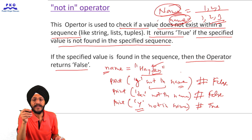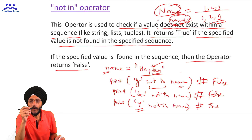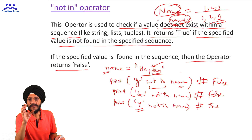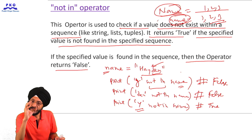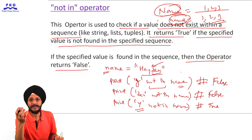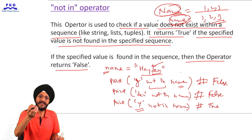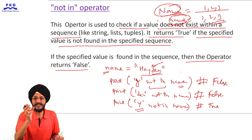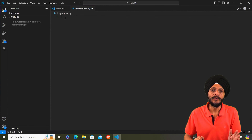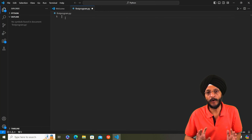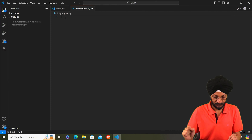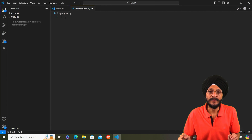Now we will understand how the 'not in' operator actually behaves in the code editor, and what output we get in practice when we use the 'not in' operator. We are using Visual Studio Code, which is the code editor for Python.